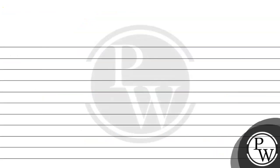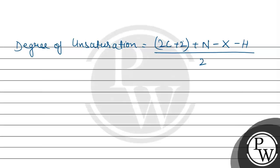Now, let us see the formula which helps to find the degree of unsaturation. Degree of unsaturation equals 2C plus 2 plus nitrogen minus halogen minus H divided by 2.